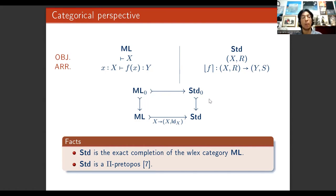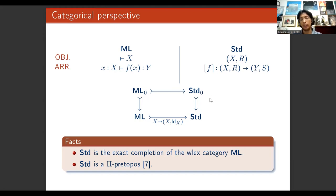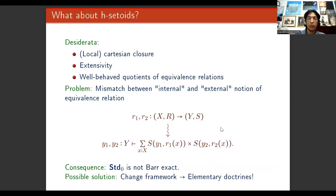Our starting point was to observe two main facts about the category of setoids. The first is that this category is obtained as the exact completion of the syntactic category ML. The second is that this category is a rich category — it is actually a Π-pretopos, or a locally Cartesian closed pretopos. Starting from these two facts, we aimed to prove similar properties for the category of H-setoids: that it is locally Cartesian closed, extensive, and has well-behaved quotients of equivalence relations.